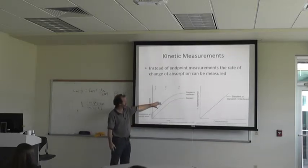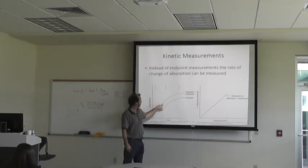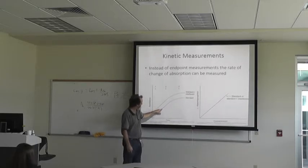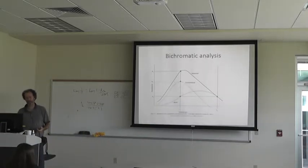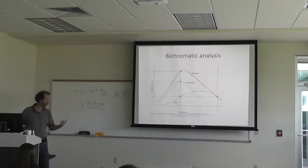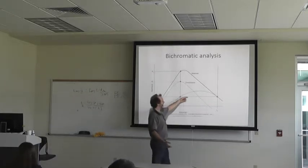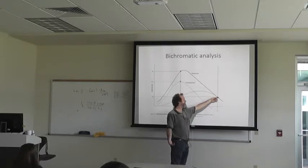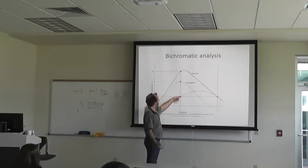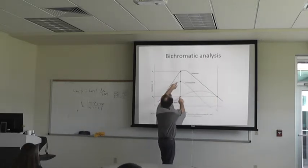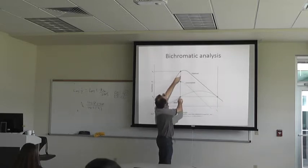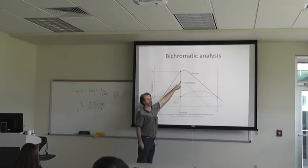If you just look at the change in absorbance over time versus just an endpoint, if you have the endpoint here it's going to be a lot higher than the endpoint there, and that's due to the interference. Have you heard of bichromatic analysis? You measure at two different wavelengths, and basically use one wavelength as the zero-absorbance reference — like a blank — and subtract the absorbance at that wavelength from the observed absorbance to get the real amount.